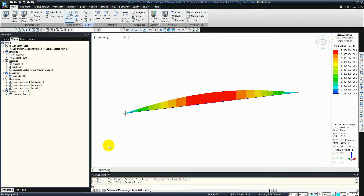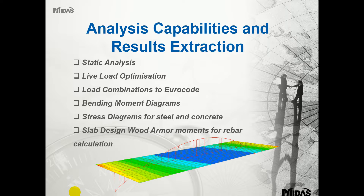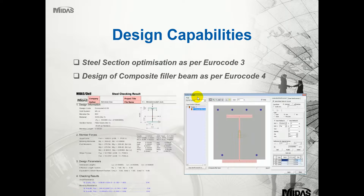Now going back to the presentation to look at some of the design features. We're going to focus on the steel section optimisation as per Eurocode 3, and that will be done on the 15 degree skew model. Then we'll focus on the design of the composite filler beam as per Eurocode 4, which will be the 30 degree skew angle model. So I'll move on to that now.